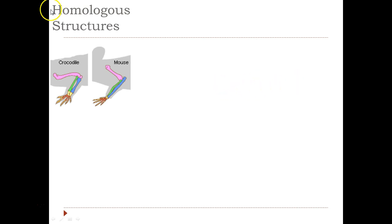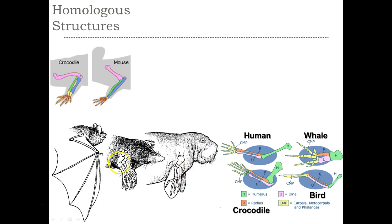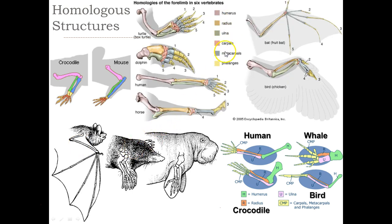Now let's get into homologous structures — 'homo' meaning the same. Take the crocodile limb and the mouse limb: even though they are very different animals, they have the same plan. One bone — the humerus — two bones — the radius and the ulna — then the carpals and metacarpals, and five digits. This is called a homologous structure. A human, a whale, a bird, and a crocodile all have the exact same plan: one bone, two bones, a bunch of blobs, and five digits including a thumb. Even whales have thumbs — a dolphin has thumbs — which implies they all share a common ancestor who had that plan.